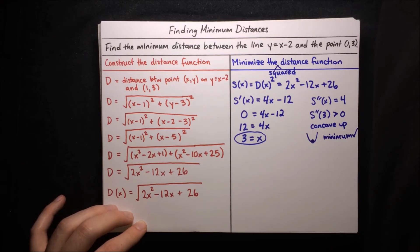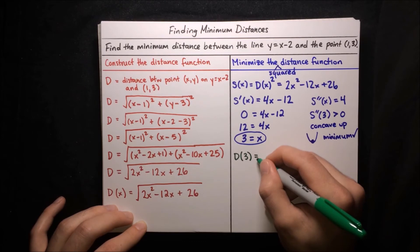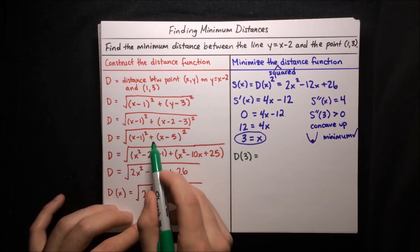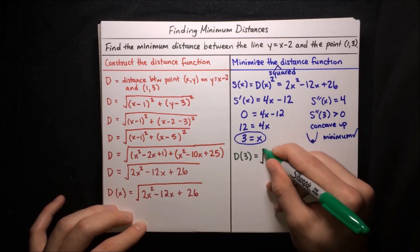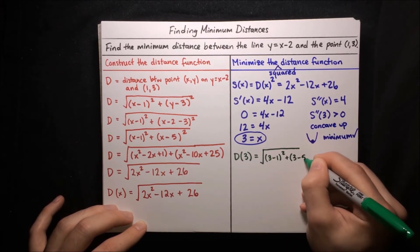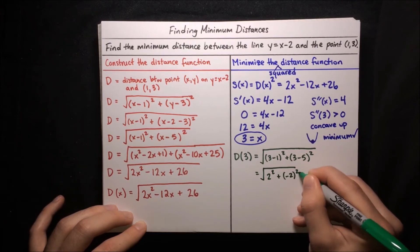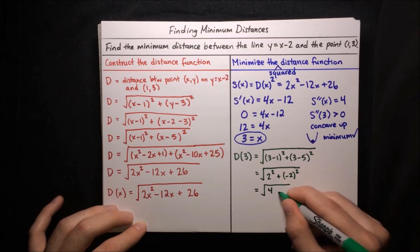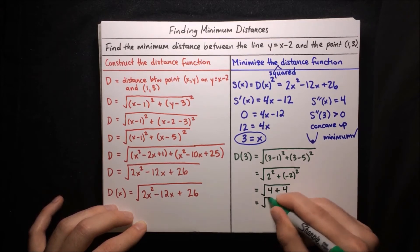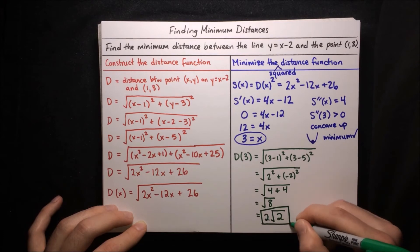We've found that x equals 3 is the x-coordinate of the point of minimum distance. Now we evaluate the distance function at x equals 3 using the earlier form: d(3) equals the square root of (3 minus 1) squared plus (3 minus 5) squared, which equals the square root of 4 plus 4, equals the square root of 8, which equals 2√2. So our minimum distance is 2√2.